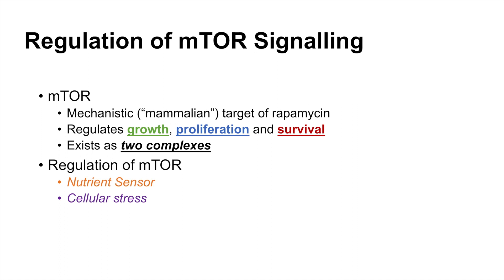mTOR exists in two different complexes: mTOR complex 1 and mTOR complex 2, which we'll talk about later in the lesson. Regulation of mTOR occurs through several mechanisms. mTOR is a nutrient sensor, so nutrient surplus or nutrient deficiency will regulate mTOR in different ways. Different types of stress mechanisms also regulate mTOR.